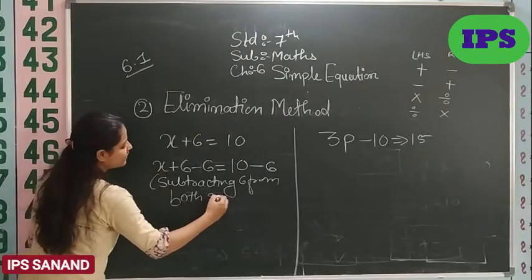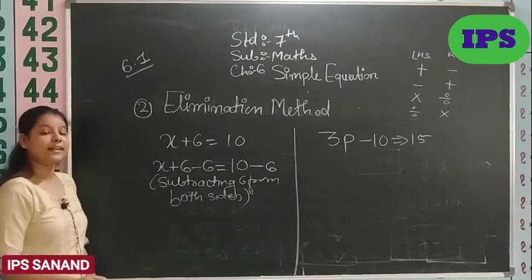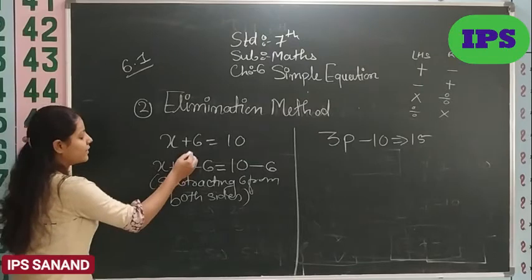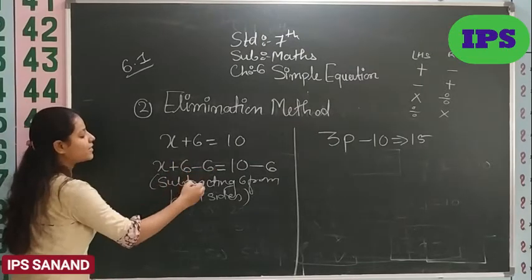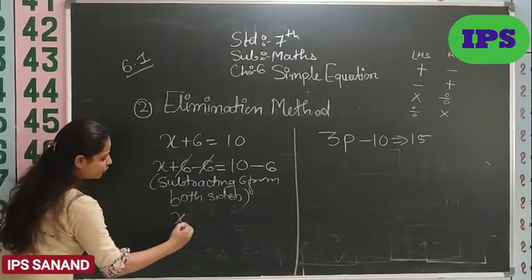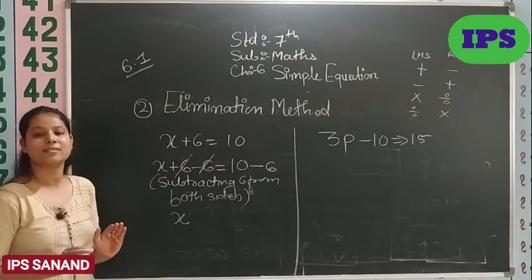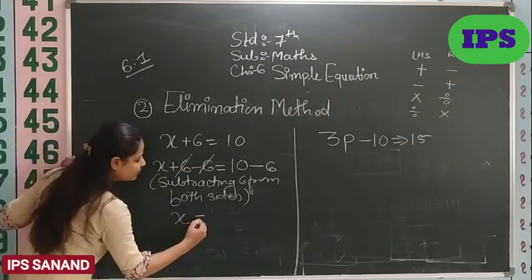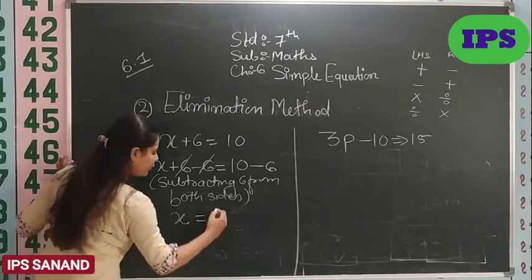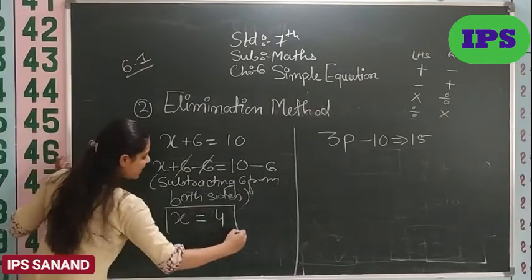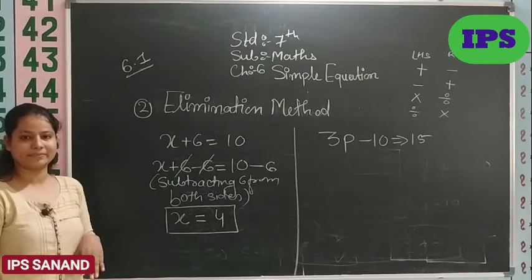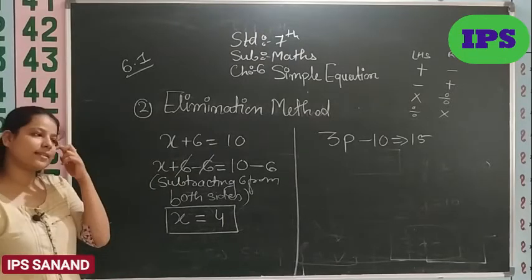Subtracting 6 from both sides. Why both sides? We have two sides. RHS and LHS. So, 6 plus 6 and minus 6 will be 0. We don't need to write this, because finally what do we want, only x. 10 minus 6 gives 4. So, my answer is x equals to 4.